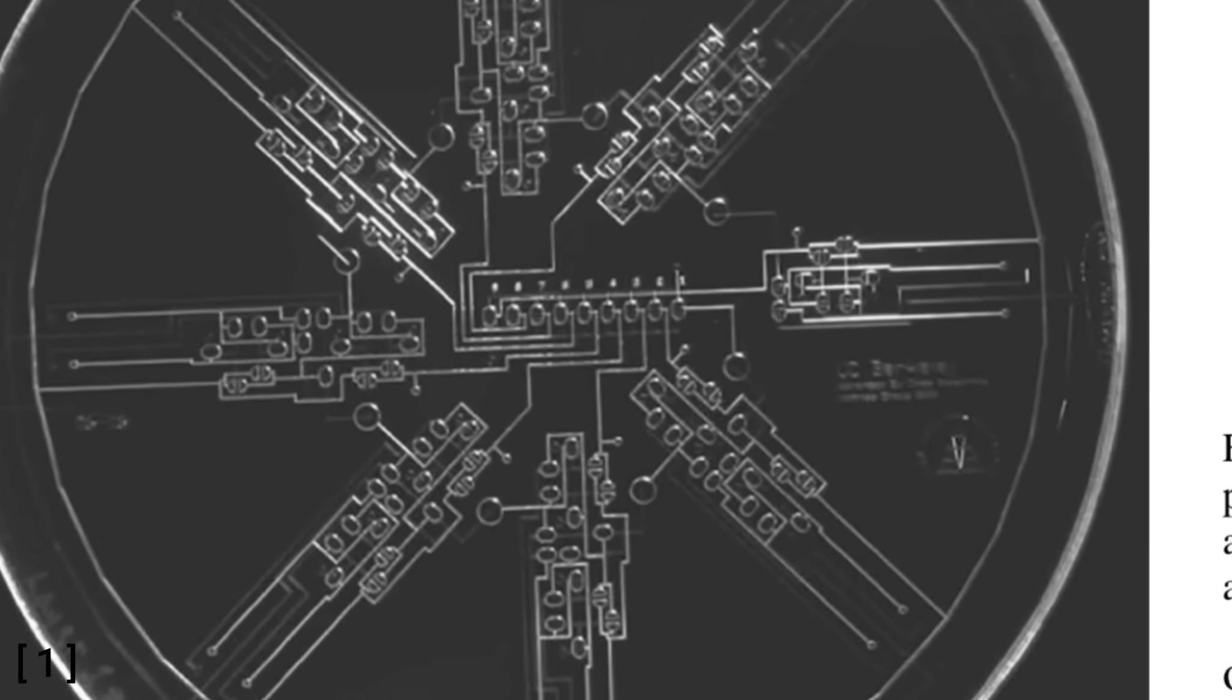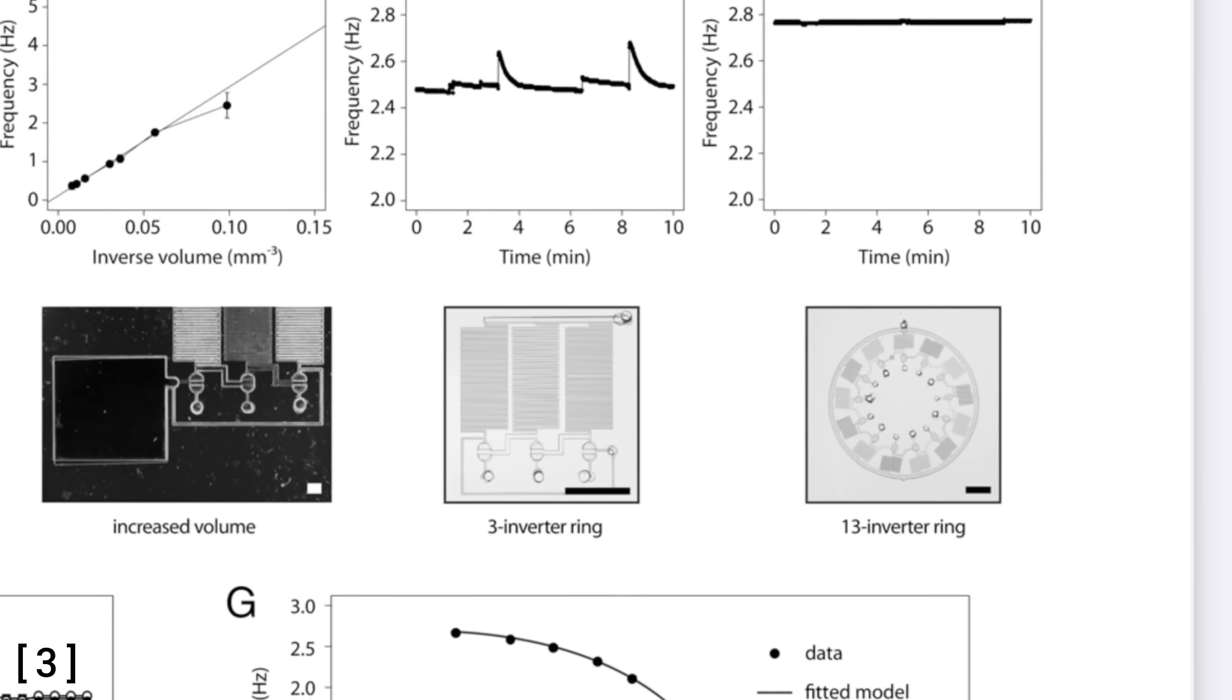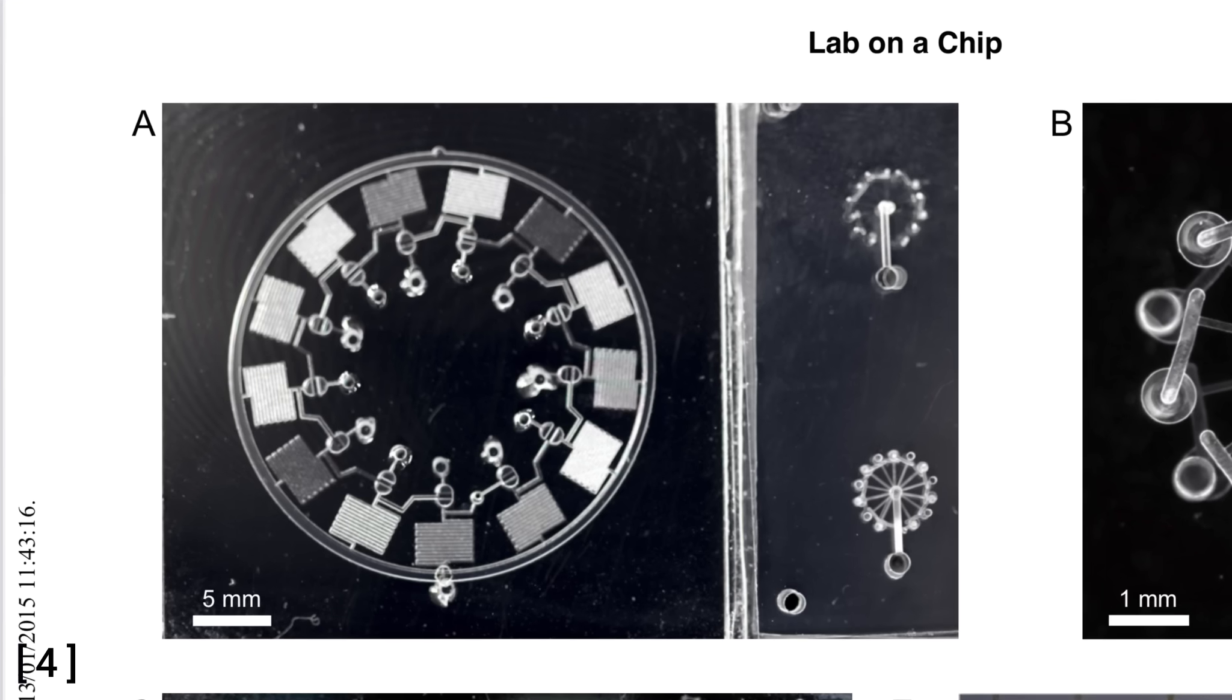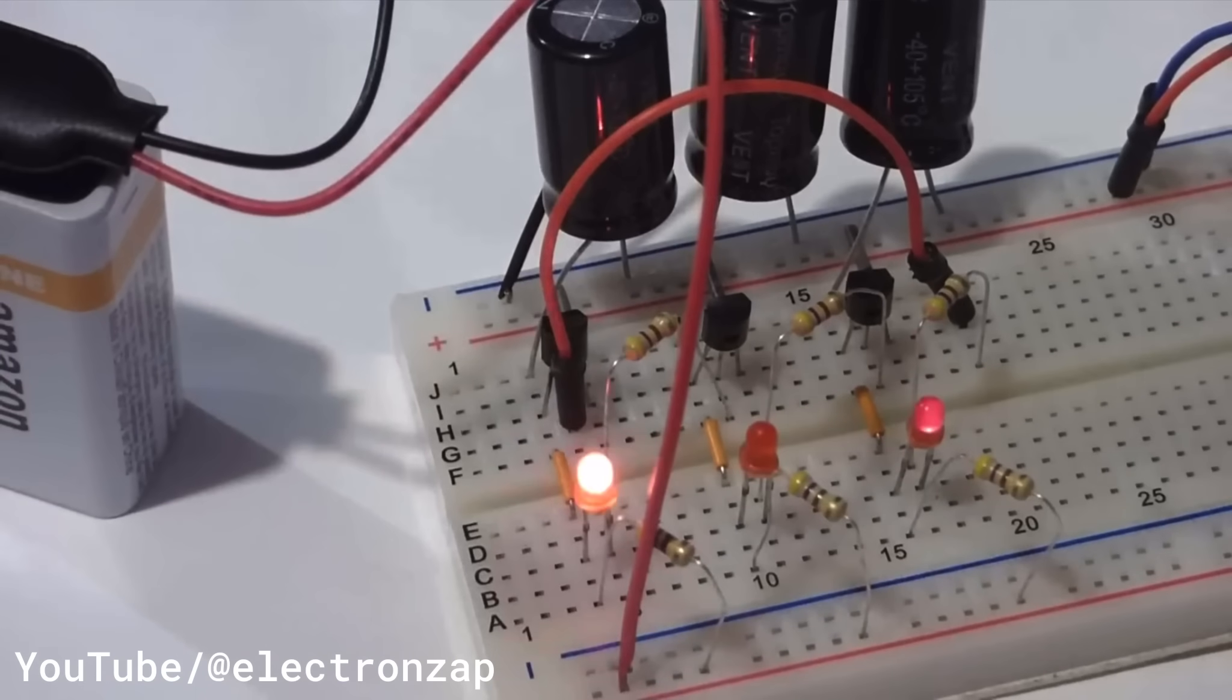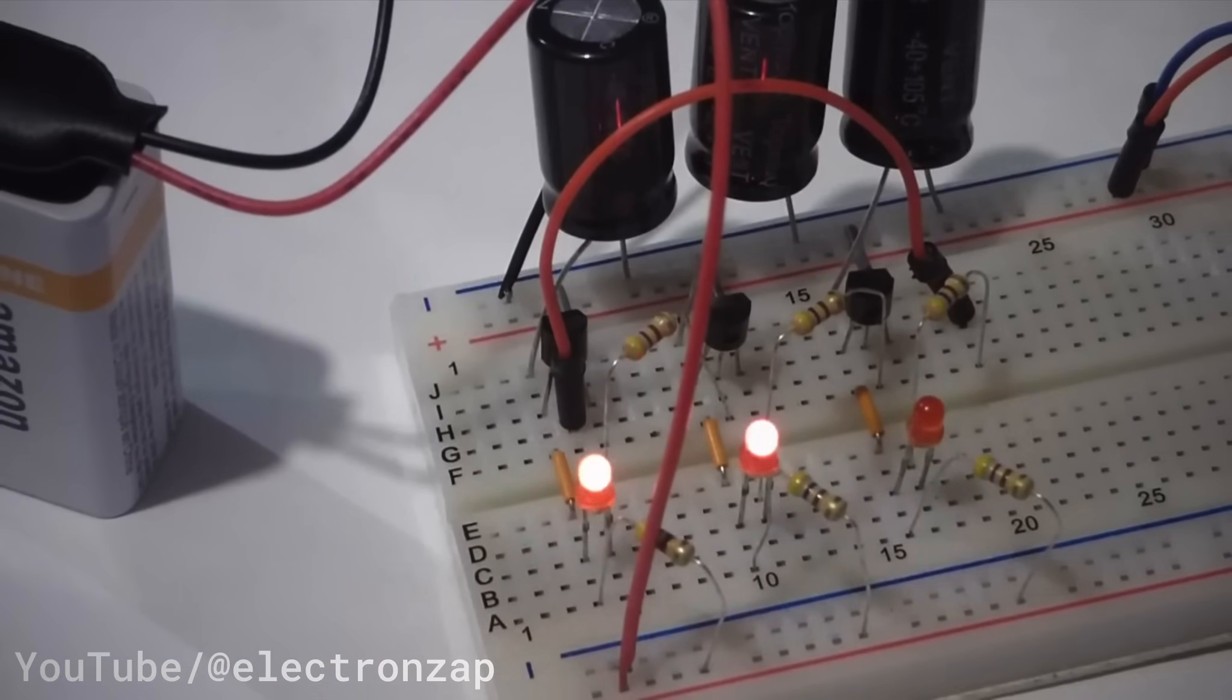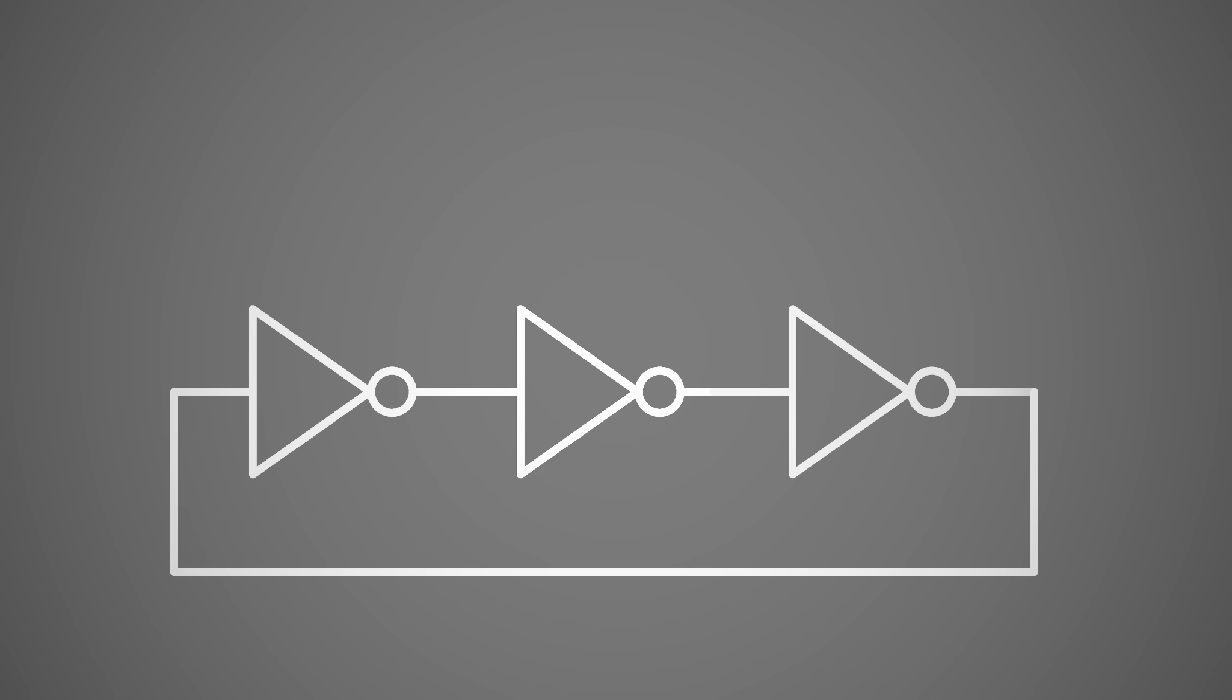If you dive into the research, one circuit shows up again and again: the ring oscillator. It's a classic from electronics, like this LED chaser. At its core, it's a chain of inverters that produce rhythmic output.